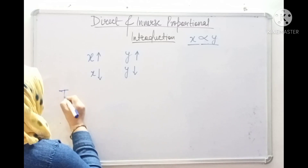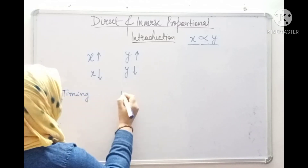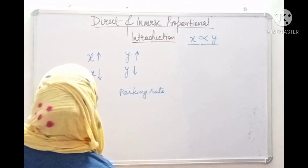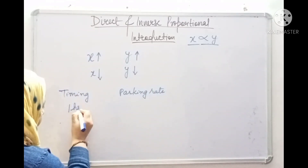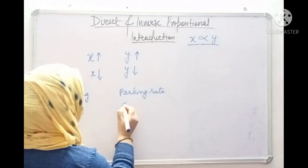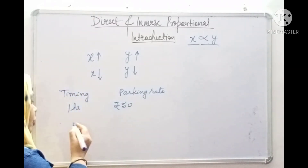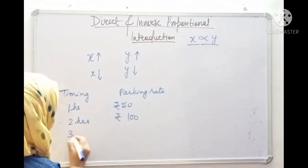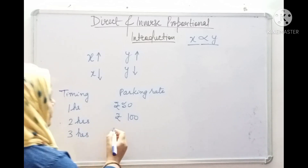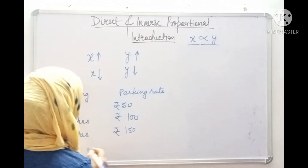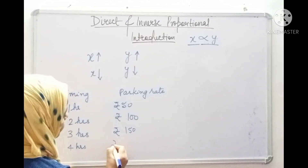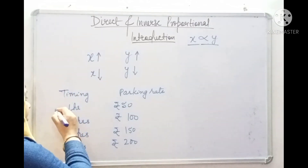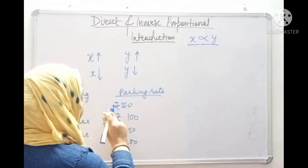Suppose that for one hour of parking, it takes 50 rupees. For two hours, it will take 100 rupees. For three hours of parking, it will take 150 rupees. For four hours, it will take 200 rupees. Just look here — timing is increasing, and parking rate is also increasing. One hour is 50 rupees, two hours is 100 rupees. If one is increasing, then the other is also increasing.